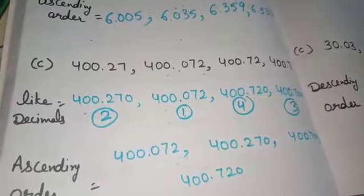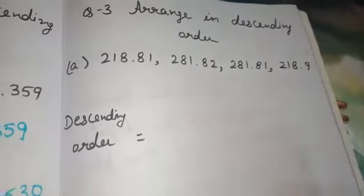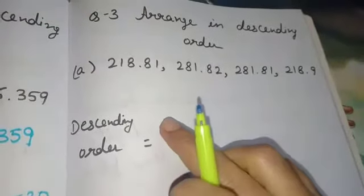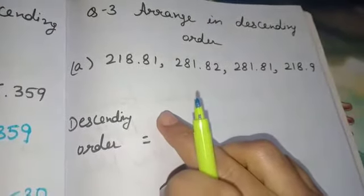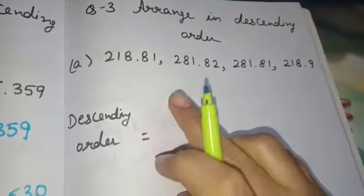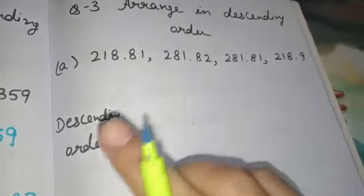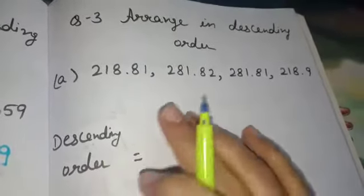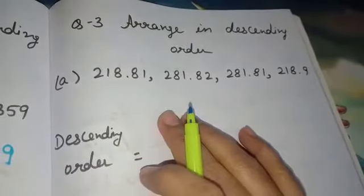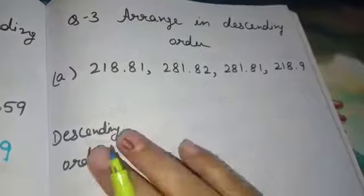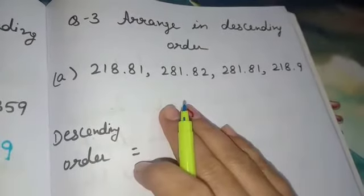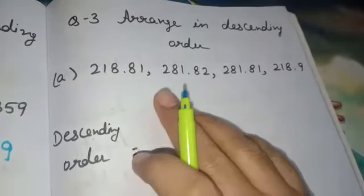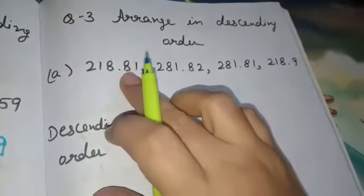The remaining two parts of question 2 you will do on your own. Question number 3 is: arrange in descending order. The same process as question number 2 will be followed here, but the order will be opposite.